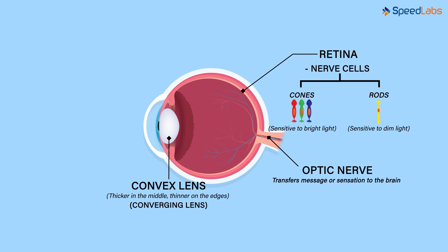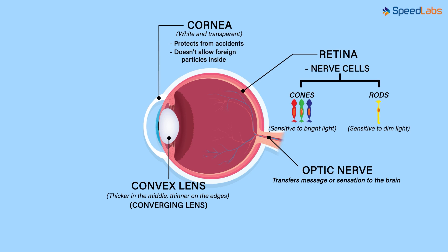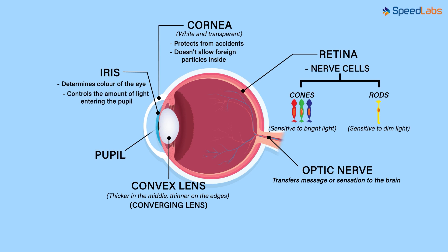Let's quickly recap what we learned about the human eye. The human eye has a roughly spherical shape. The outer part called the cornea is a thick white transparent wall which protects the eye and keeps foreign particles from entering. Behind the cornea, the colourful part called the iris is present, with a small opening at the centre called the pupil. Iris controls the light entering through the pupil by contracting and expanding. Behind the pupil, there is a converging lens which focuses the light on the retina. Retina consists of two types of nerve cells — cones and rods — which transfer the message through the optic nerve.